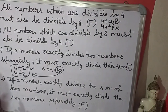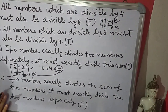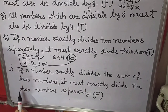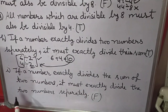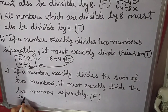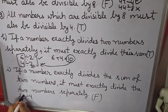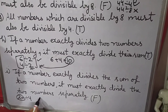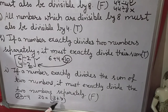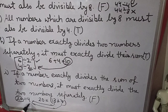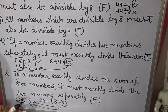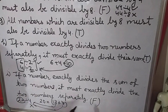This next statement is the opposite. If a number exactly divides the sum of two numbers, it must exactly divide the two numbers separately. If we take 20 — 20 is divisible by 4. Now we can write 20 as 13 plus 7. But 13 and 7 are both not divisible by 4. So this statement is false.